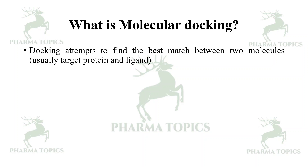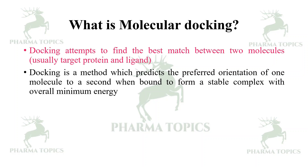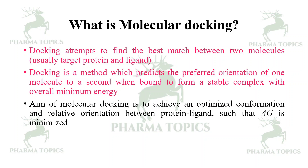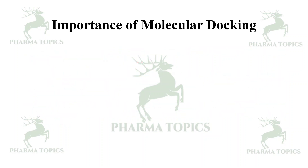Docking attempts to find the best match between two molecules, usually a target protein and a ligand. Docking is a method which predicts the preferred orientation of one molecule to the second when bound to form a stable complex with overall minimum energy between protein and ligand. The aim of molecular docking is to achieve an optimized conformation and relative orientation between the protein and ligand such that delta G is minimized.